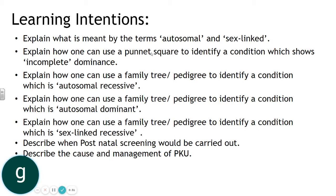Just use the same logic you would for any other condition to answer those questions. We're going to look at autosomal versus sex-linked inheritance, explain how to use a Punnett square in identifying conditions with incomplete dominance, look at autosomal recessive conditions and how we can use family trees and pedigrees to identify the genotype of different individuals, look at autosomal dominant, sex-linked recessive conditions, and in the next video postnatal screening and PKU.